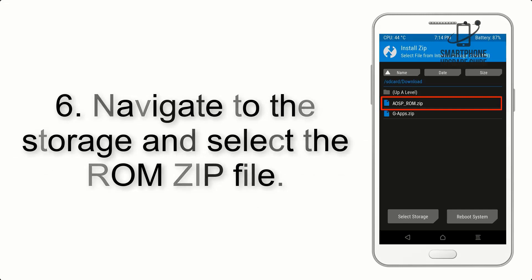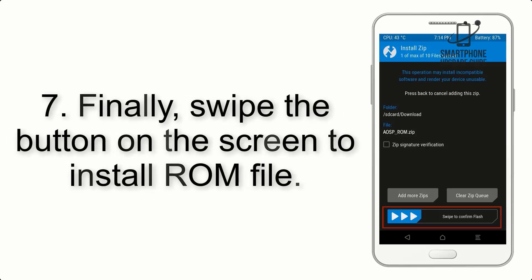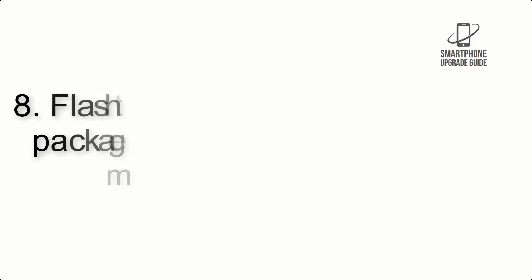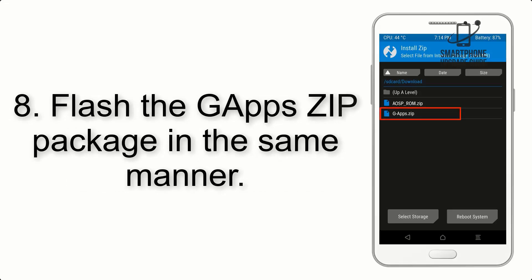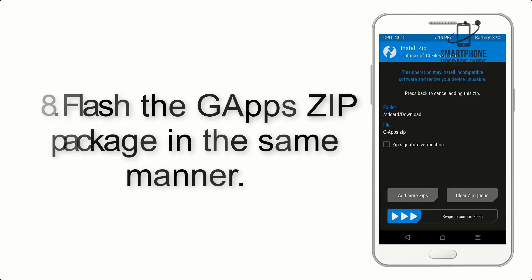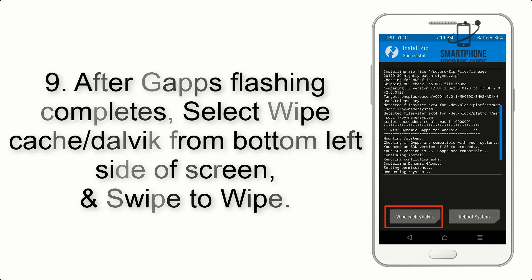Step 5: Go back to the recovery main screen and tap on the Install button. Step 6: Navigate to the storage and select the ROM zip file. Step 7: Finally, swipe the button on the screen to install the ROM file.